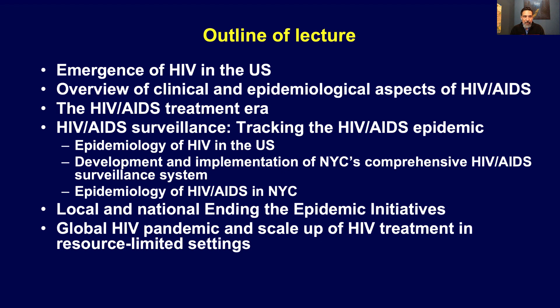Towards the end, we'll wrap up by talking about the local and national so-called Ending the Epidemic initiatives. These are initiatives that have been launched both in New York and since then nationally, aiming to really reduce the public health threat of HIV to levels below which we can now thankfully achieve theoretically, because we have some amazing tools to help control the epidemic. And then we'll briefly turn our attention globally to the HIV pandemic and how scale-up of HIV treatment in resource-limited settings has been going.